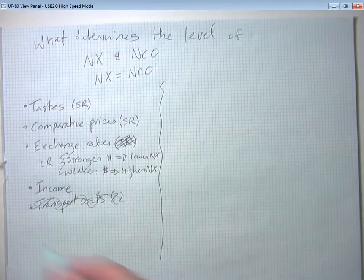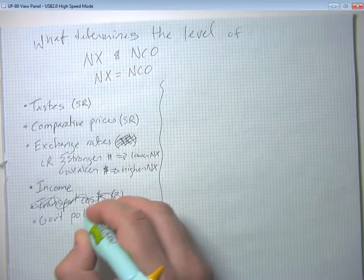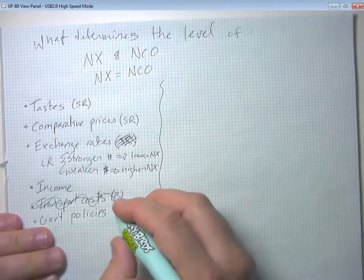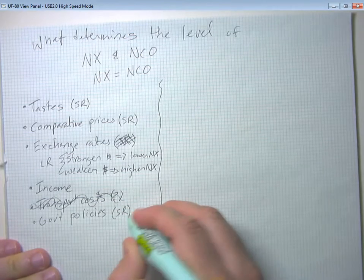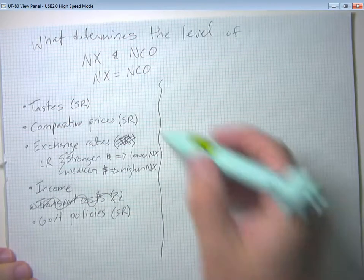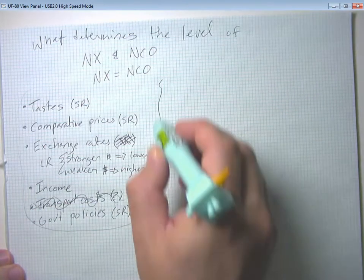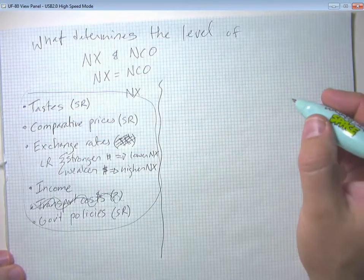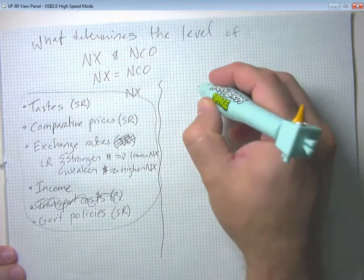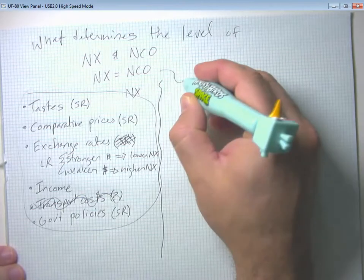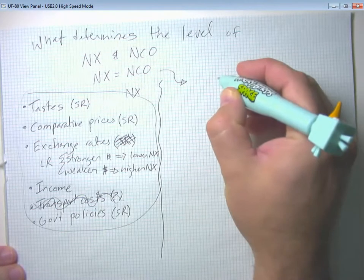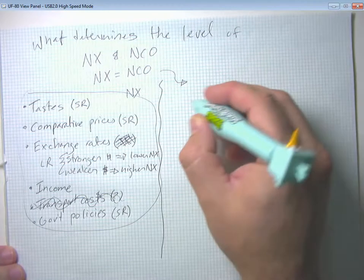And then finally, government policies, things like tariffs, and various other trade restrictions or loosenings, we think these are mainly short run influences. And so you'll notice here that sort of most of the things I have affecting the net export side of things, we think are short run influences. And when we're looking at the entire economy, we instead tend to think about things in terms of these capital flows.